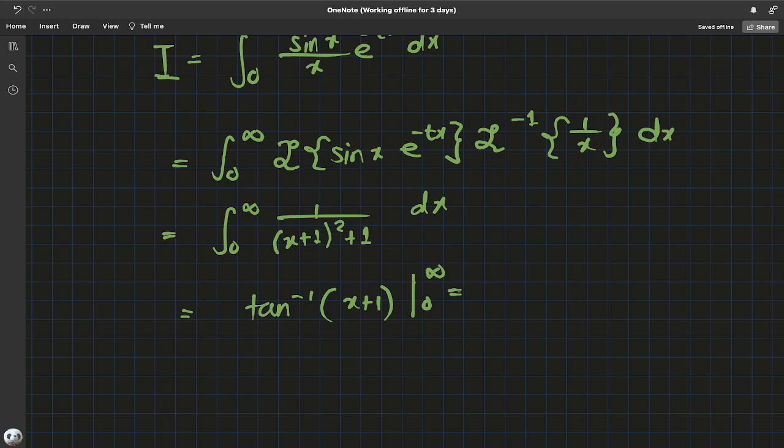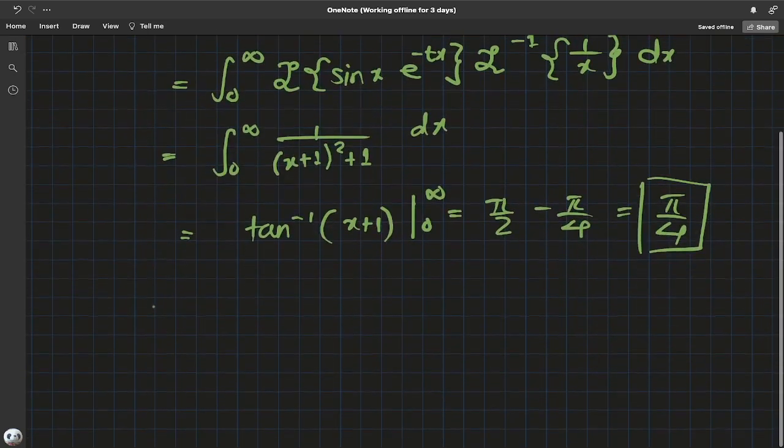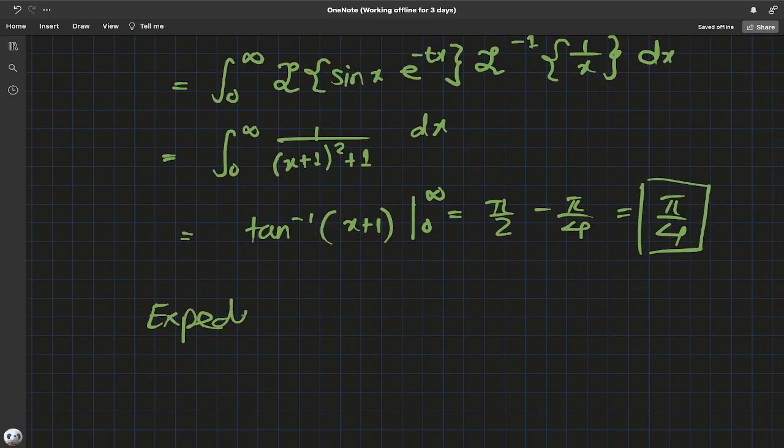Evaluate from zero to infinity. At infinity, infinity plus one is still infinity: π/2 minus inverse tangent of one for x equals zero is π/4. So we have π/4.